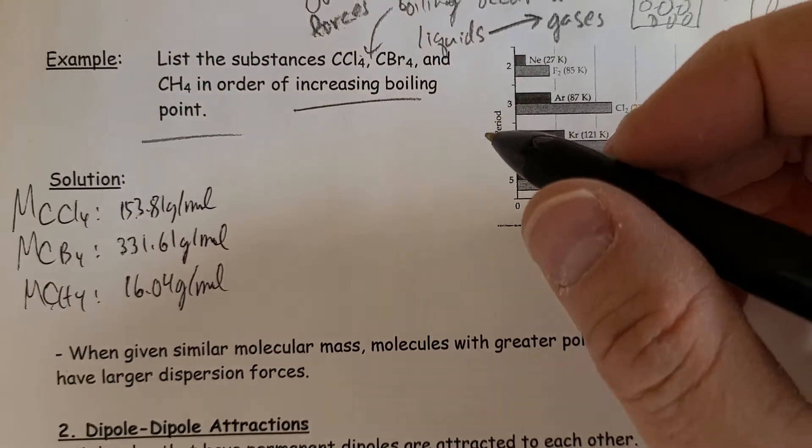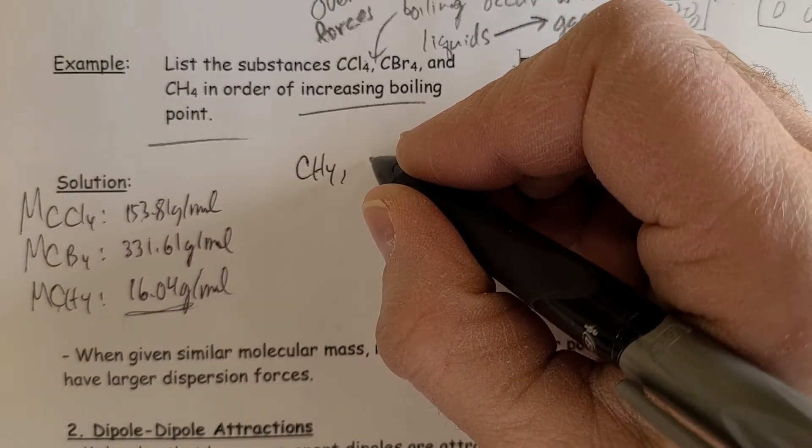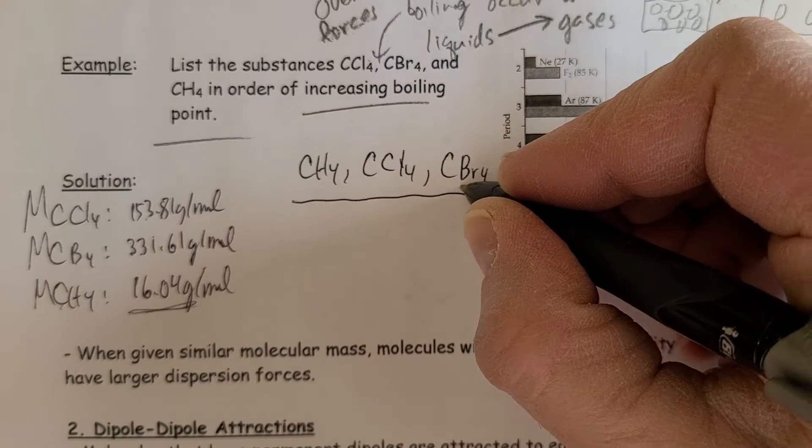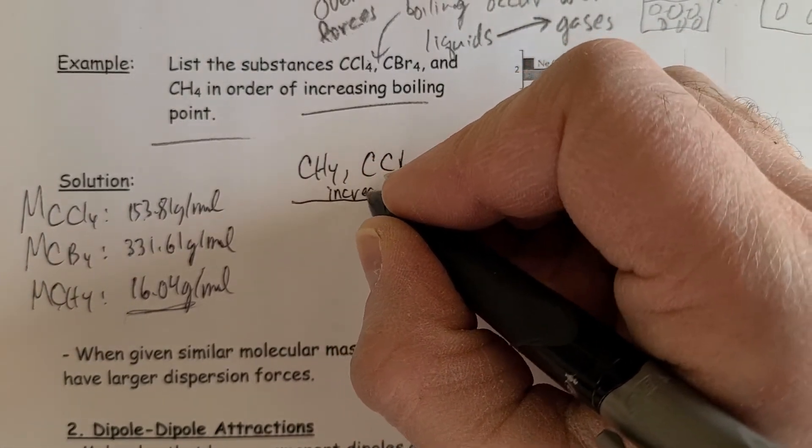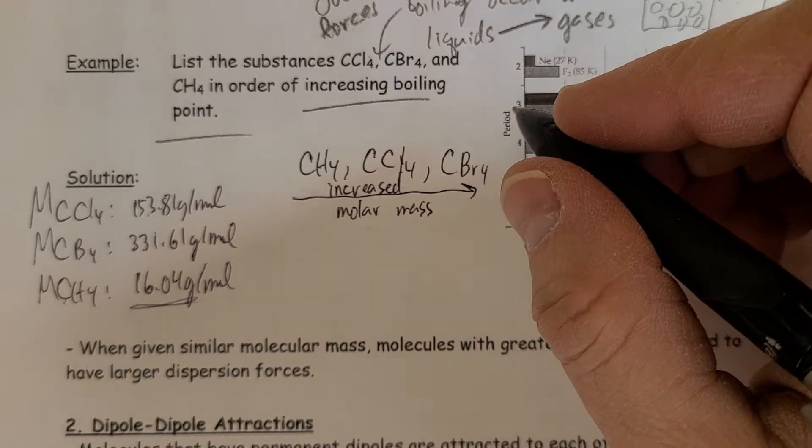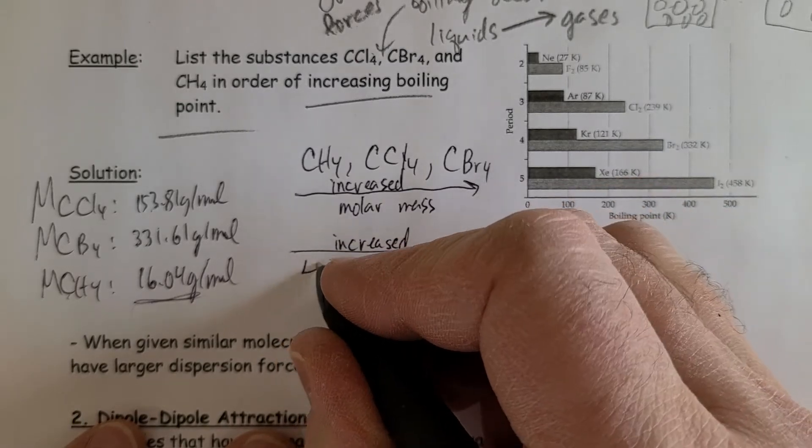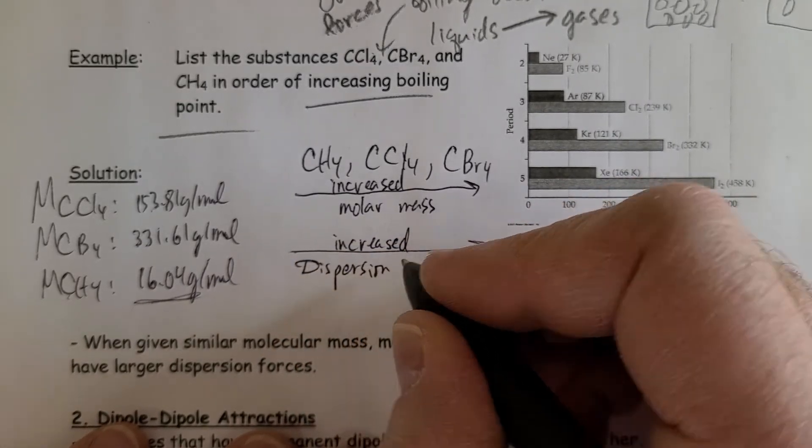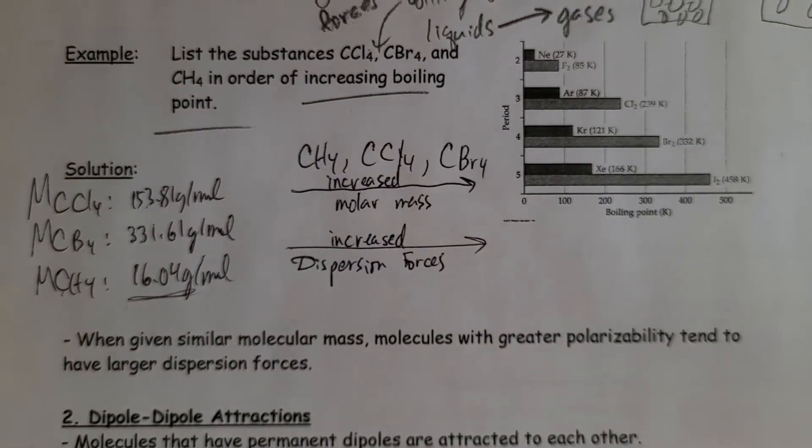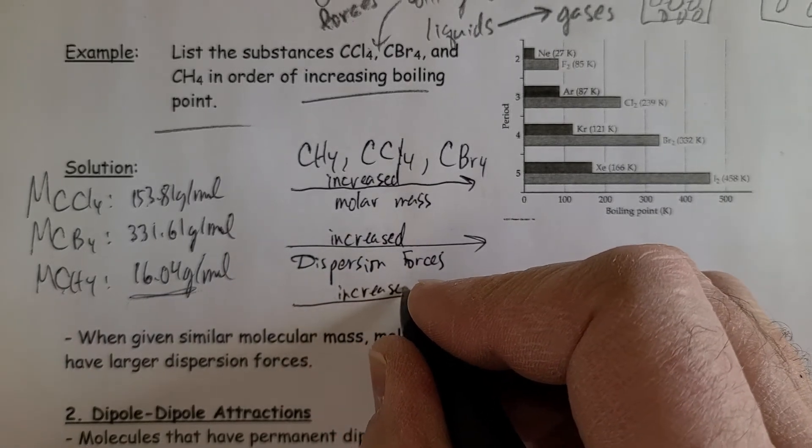That will give us an indication. So the smallest one is methane, and then the next one, carbon tetrachloride, and lastly, CBr4. If I go this way, increased molar mass. And then what happens is also increased dispersion forces. There's a larger force of attraction the larger it gets. The larger these molecules get, the greater the dispersion forces. And if there's greater forces holding them together, we can then say increased boiling point.